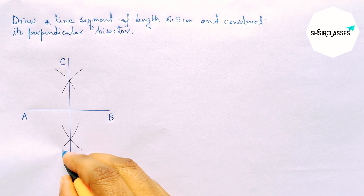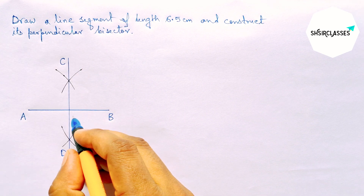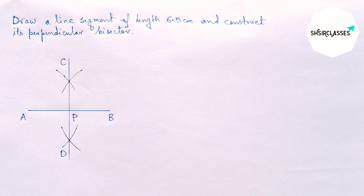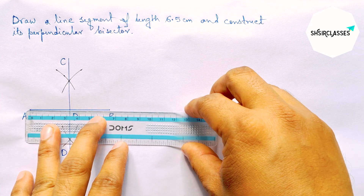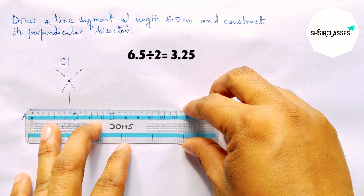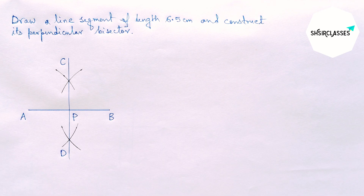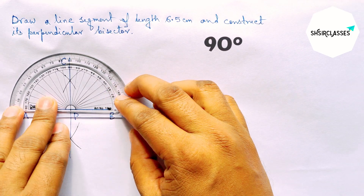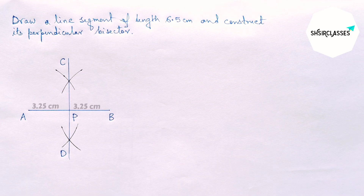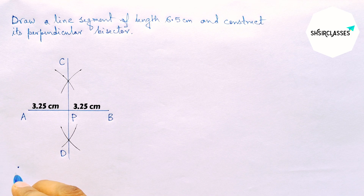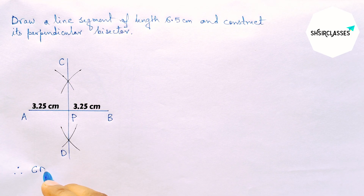Labeling here C and here D. Both lines meet at a point, so taking here point E. Next, I'm going to check whether it bisects perfectly or not — this perfectly bisects the line AB, and here this is a 90 degree angle, which means it is perpendicular.